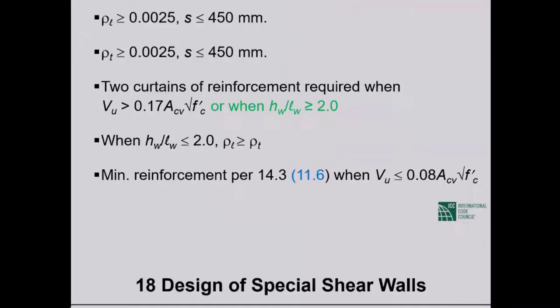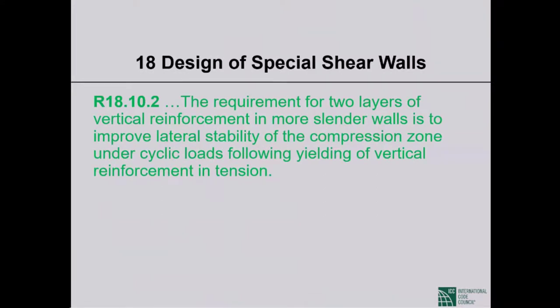The commentary to ACI 318-14 — identified with 'R' since ACI uses R for report, meaning the commentary never becomes code — notes that the requirement for two layers of vertical reinforcement in more slender walls is to improve lateral stability of the compression zone under cyclic loads following yielding of vertical reinforcement in tension.